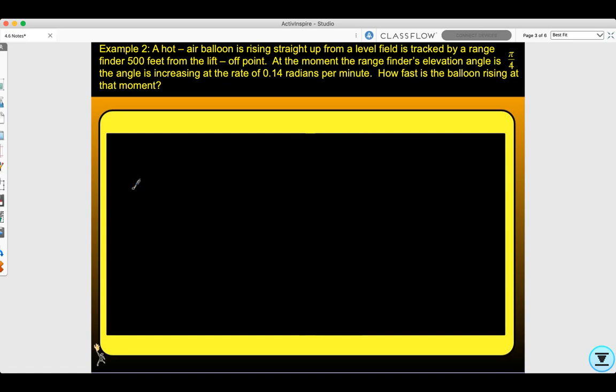Let's draw a picture. Here's the ground, the hot air balloon is up in the sky, and I'm using a rangefinder here. I have an angle of π/4, 500 feet from where it went up. How fast is the balloon rising? We don't know how high the balloon is, so that's our unknown y.